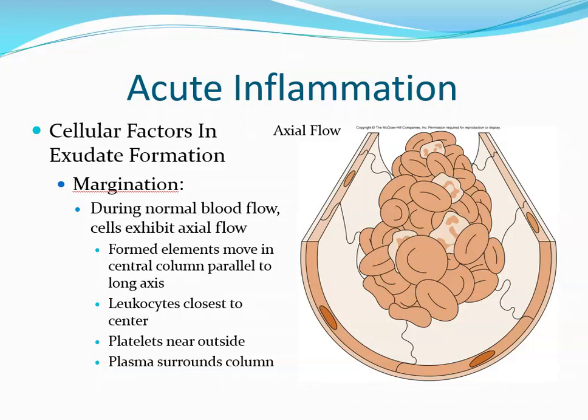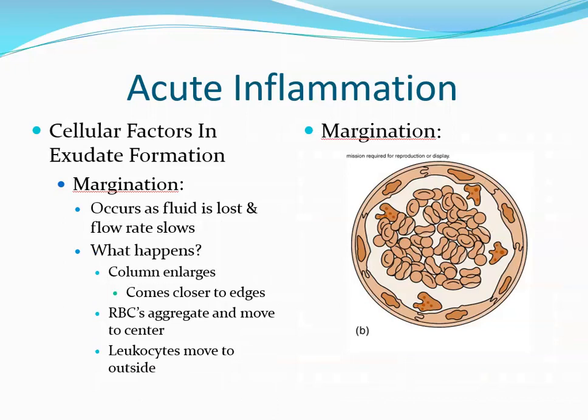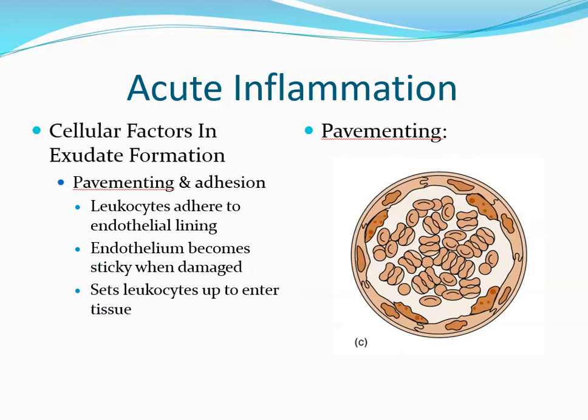Plasma surrounds this column. Margination occurs as fluid is lost and flow rate decreases. The column enlarges so its border comes closer to the endothelial lining. The loss of fluid causes red blood cells to clump — these clumps become the largest and heaviest, moving to the center of the column, forcing leukocytes to the outer position. The second step is pavementing and adhesion — the adherence of leukocytes to the endothelial surface in the area of injured vascular tissue, because the endothelium becomes sticky when damaged.